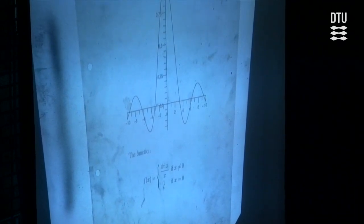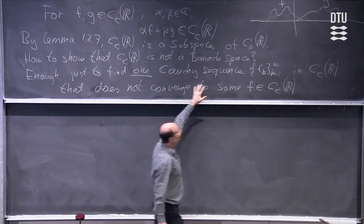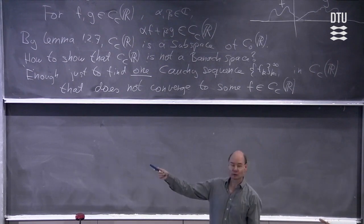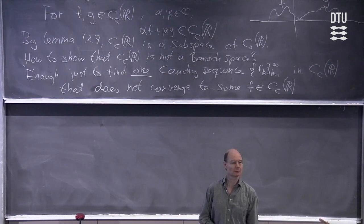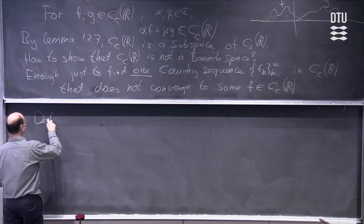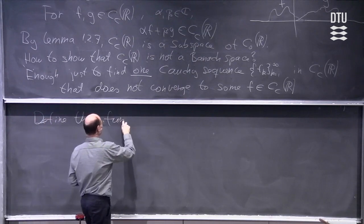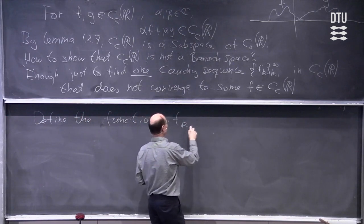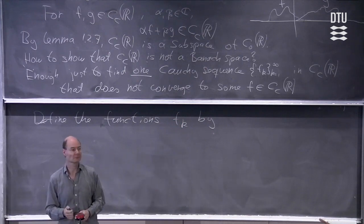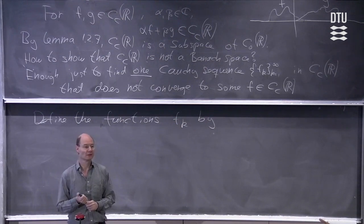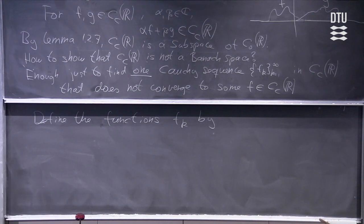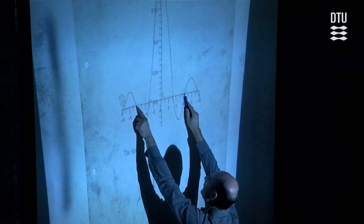What we need is a sequence of functions that are continuous and have compact support. How can you use this sinc function to get functions with compact support? The answer — as suggested — is to cut it off: you take the function and cut it off at the zeros of sine x, including more and more oscillations as k increases.